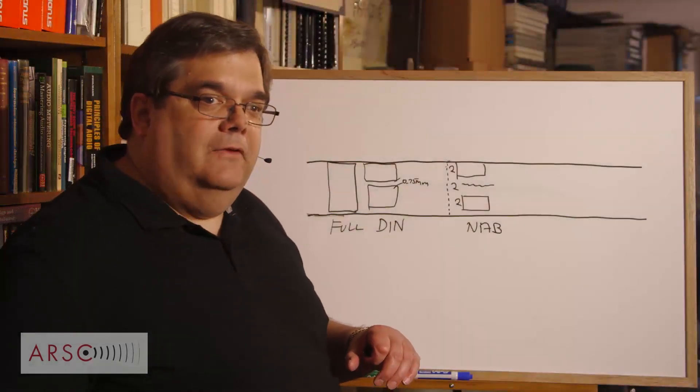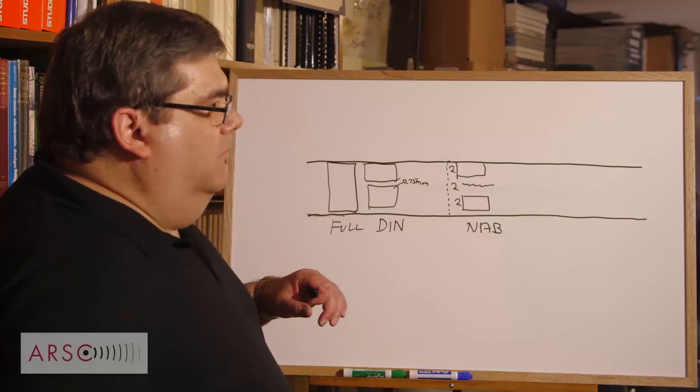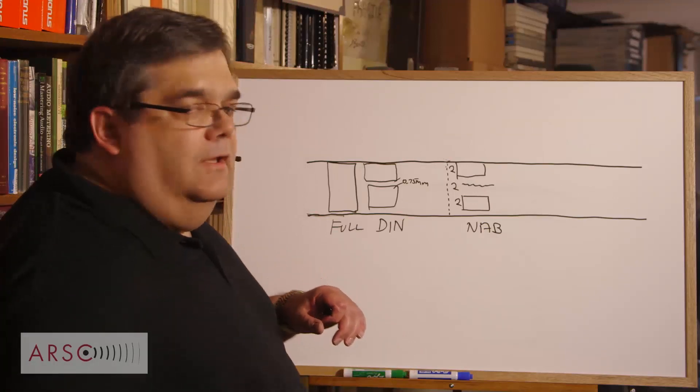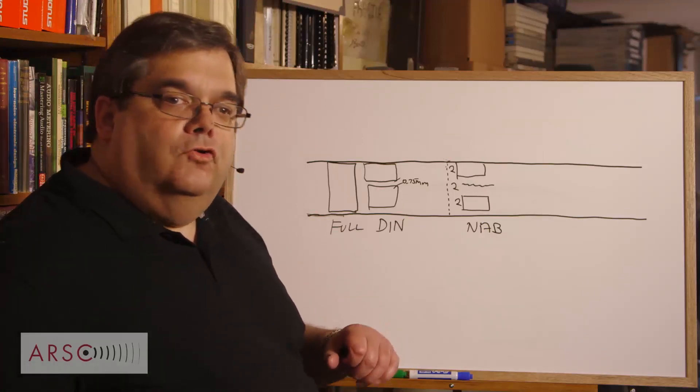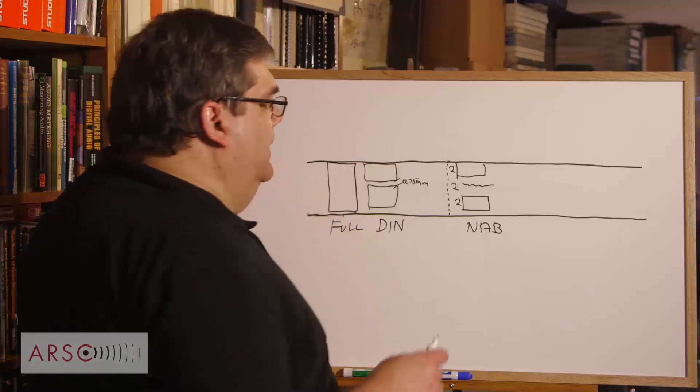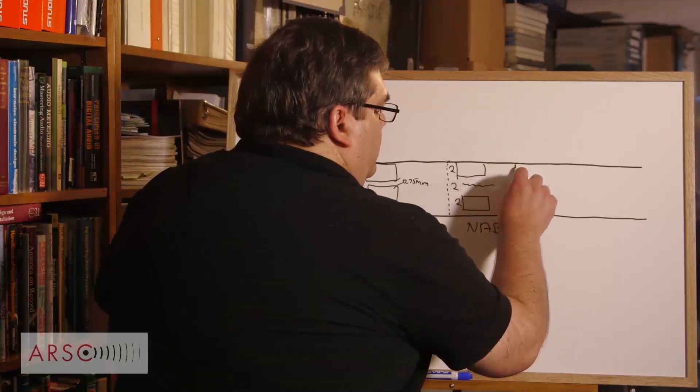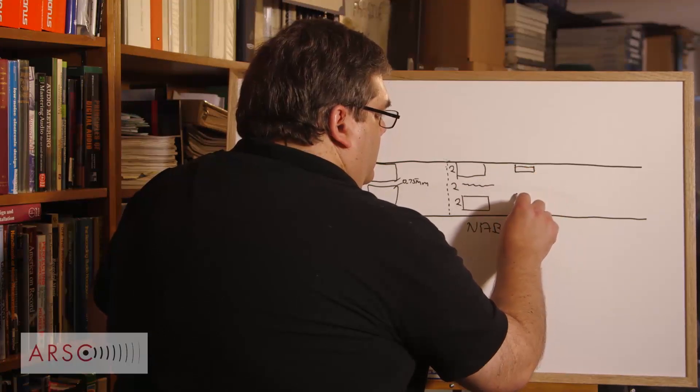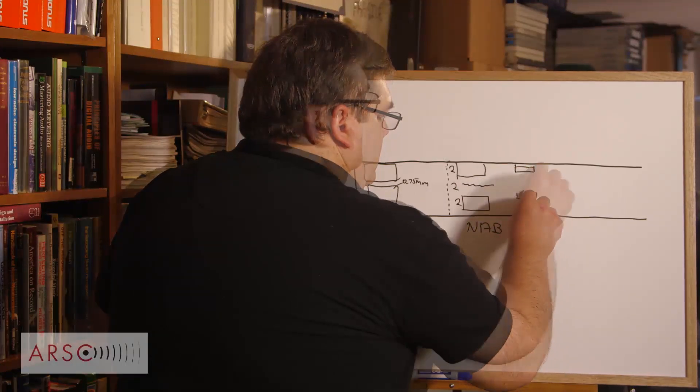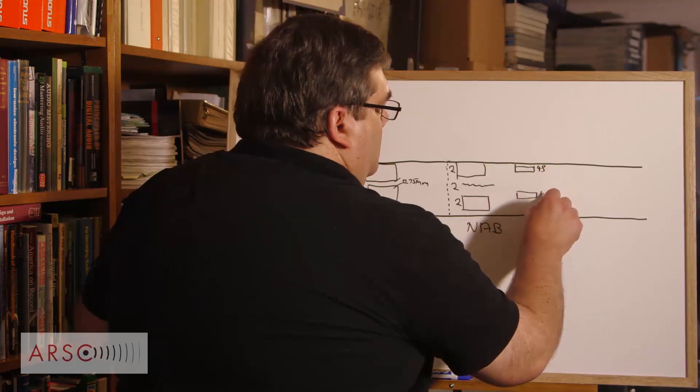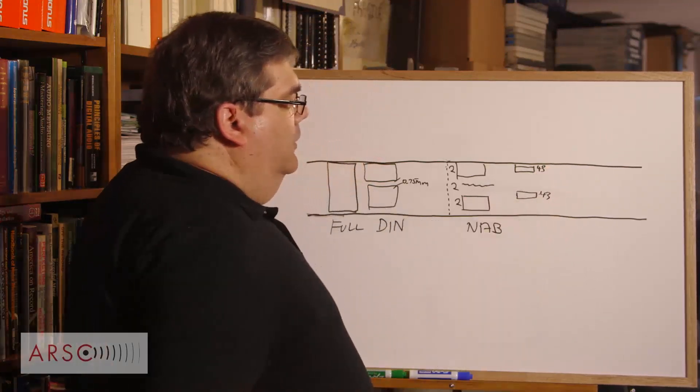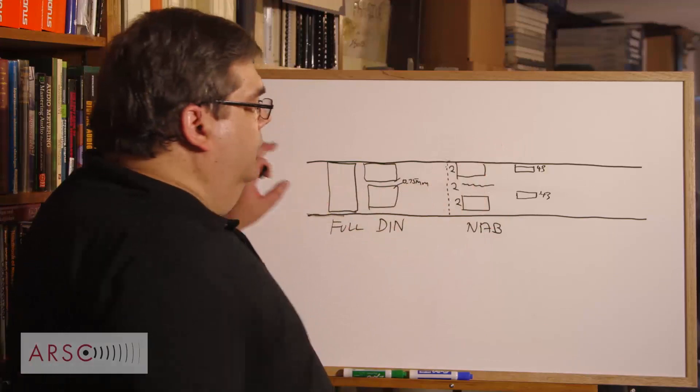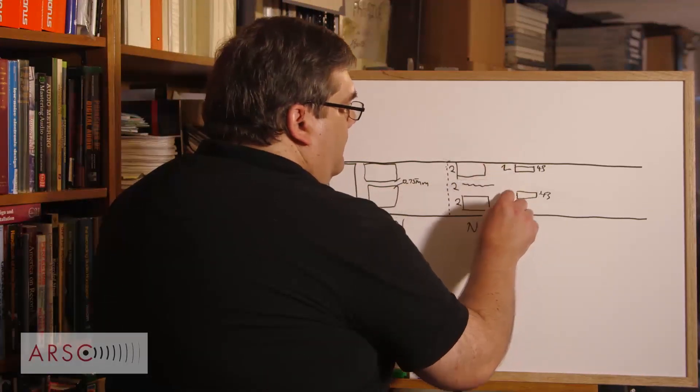Consumers came along and tape was expensive. In the very late 50s, quarter track stereo came along. This gets a little harder to draw. We had two 43 mil tracks, and you'll notice that they're offset. This was left, and this was right.